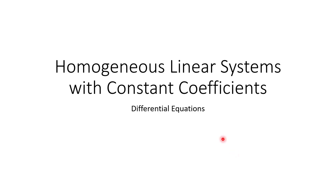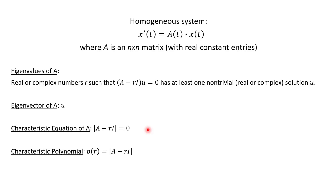Hi everyone. In this video, we're going to be talking about homogeneous linear systems with constant coefficients, continuing with our differential equations. Some of this is going to look familiar, and then we'll go over all the details and some examples. So our homogeneous system for our differential equations is x prime equals A times x, where A is an n by n matrix with real constant entries.